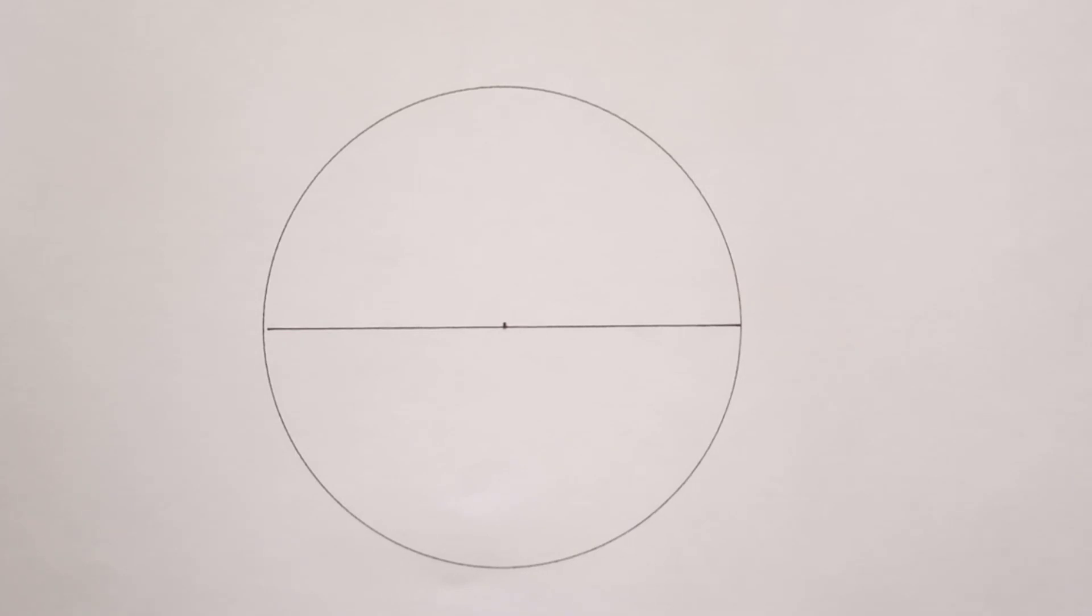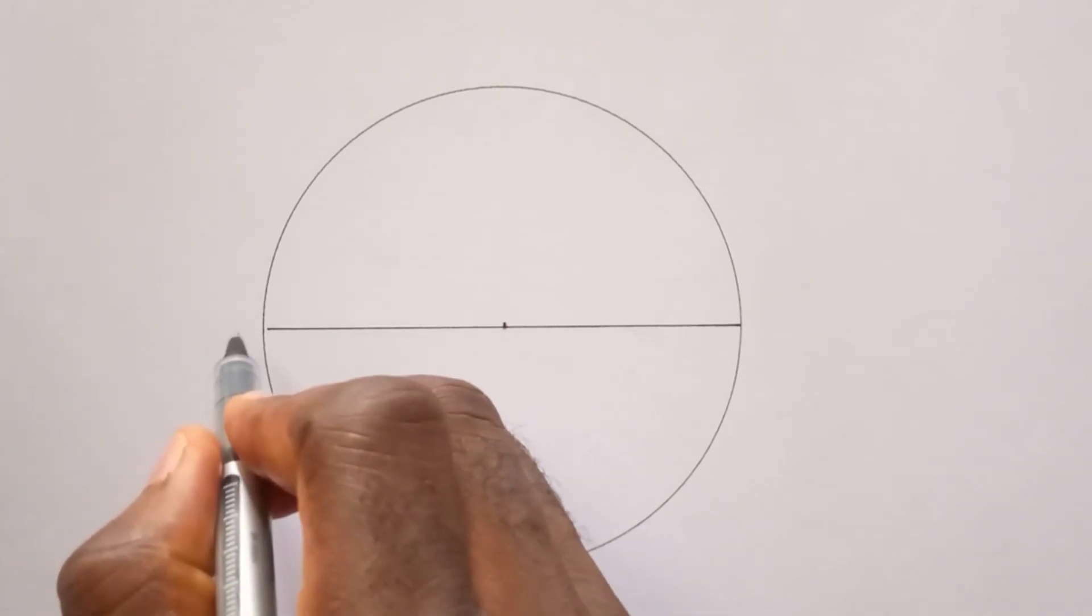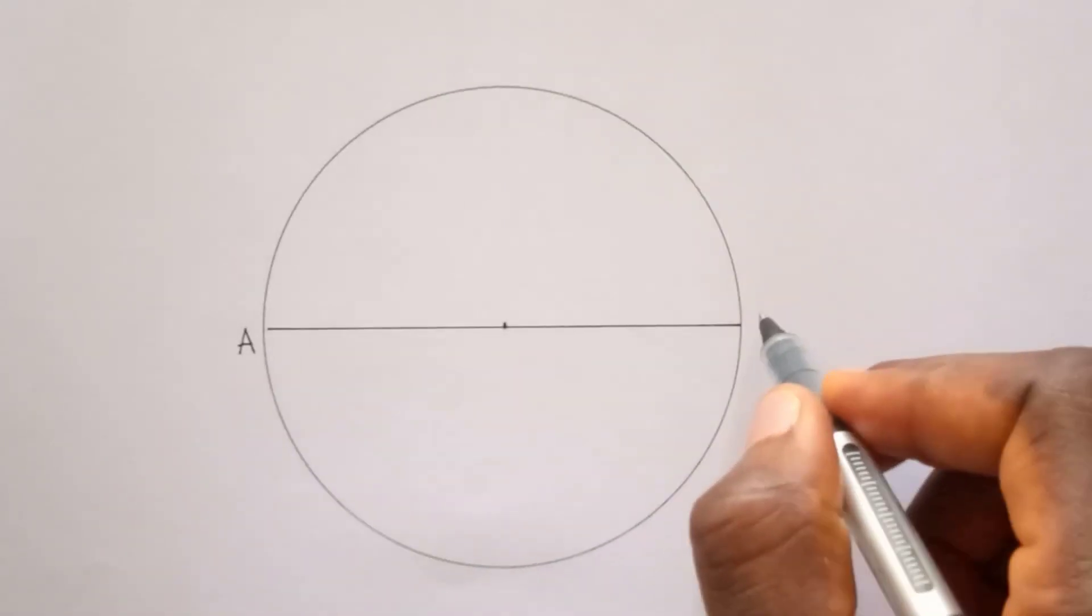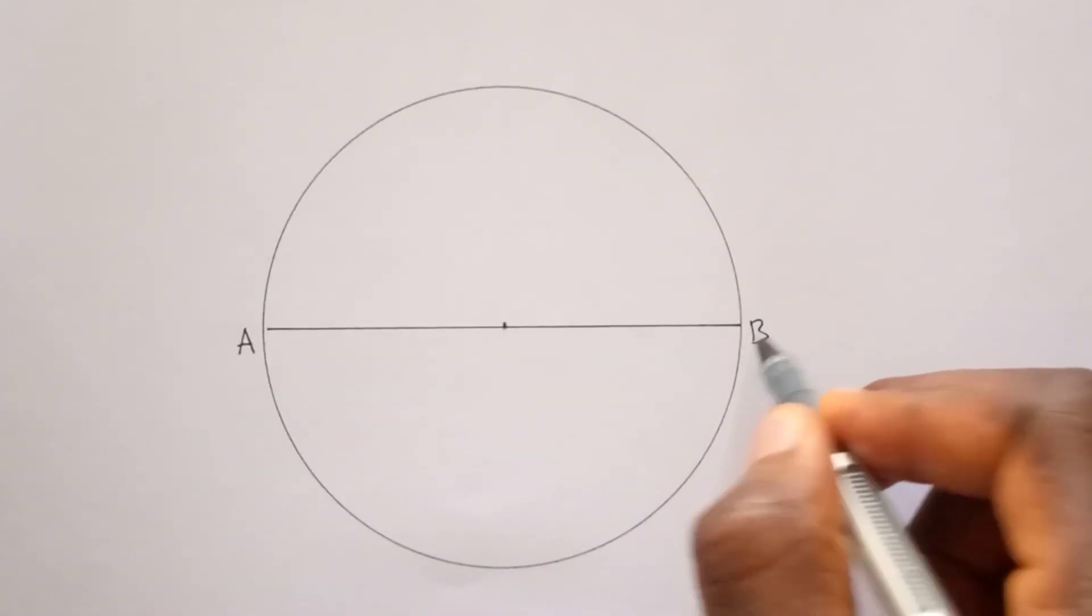Once you draw a circle, you indicate this point as A and this point as B.